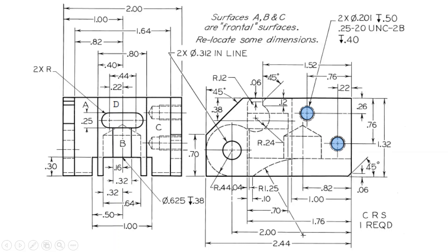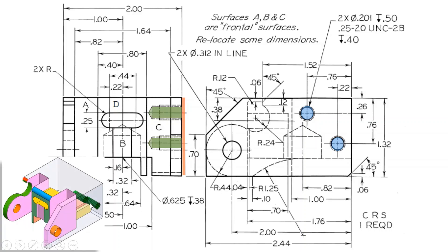The next feature is the threaded holes seen from the right side. Both holes start from the right face and are drilled inside to a depth of 0.5 inches. They are quarter-inch 20 threads per inch, unified national coarse thread, classified as internal thread, with a thread depth of 0.4 inches. So the hole is half an inch deep but threaded to 0.4 inches. These are the two threaded holes starting from the right face.